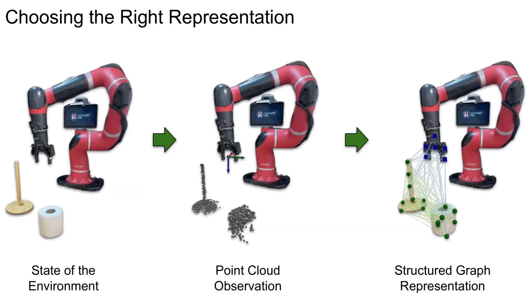For the current state representation, we use segmented point clouds which we process with a geometry-aware encoder and construct a graph representation that fully captures the state of the environment and the robot at the current time step. The sequence of such graphs can be used to represent a complete demonstration trajectory or future actions.